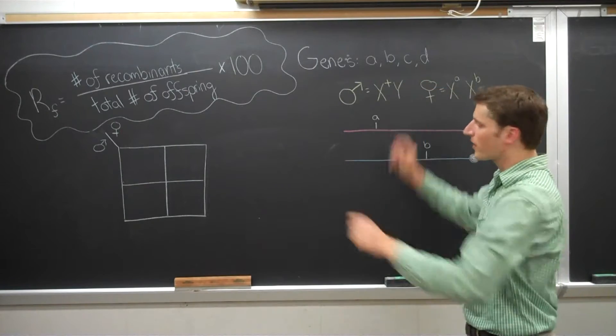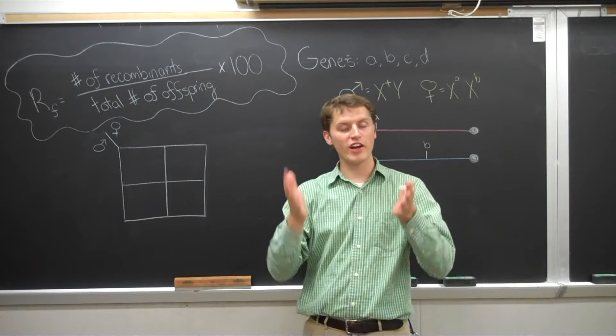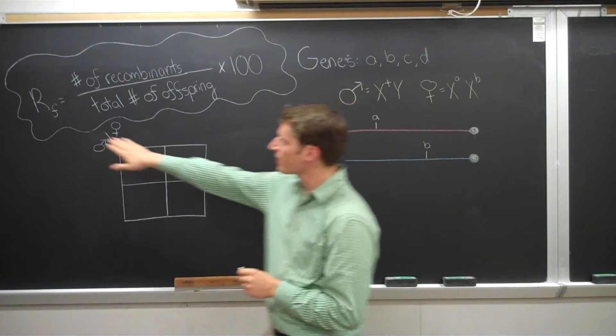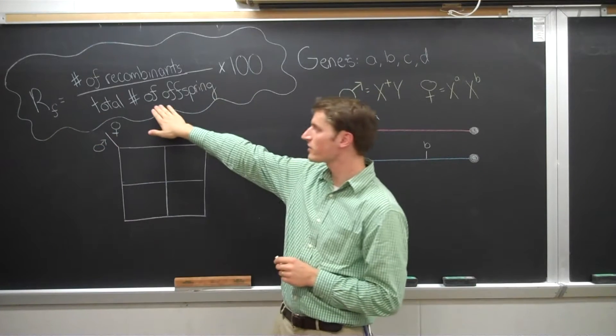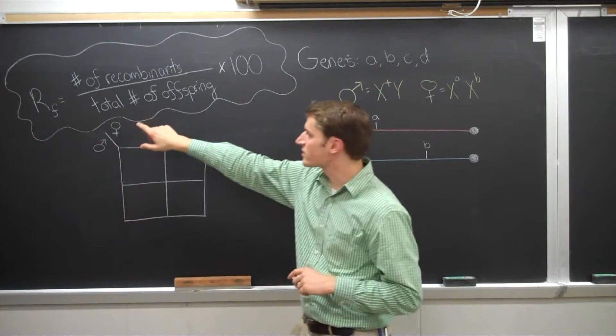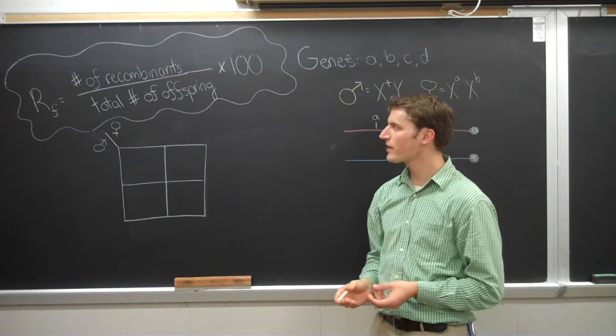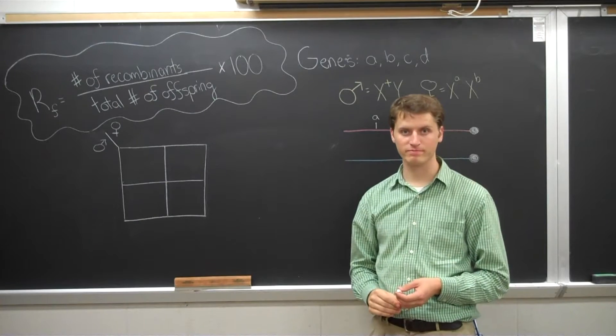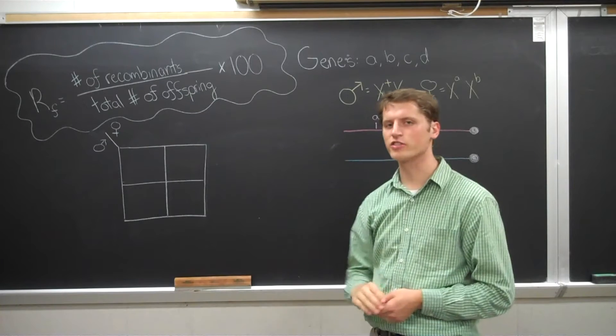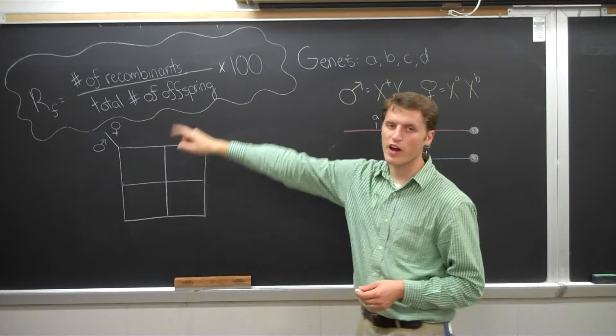Just to give you the whole big picture. To start off, really what we're doing here is we're calculating the recombination frequencies between two different genes. Recombination frequency is calculated by this equation up on the board. RF, recombination frequency, equals the number of recombinant offspring divided by the total number of offspring, and then you multiply that by 100 to give you a percentage.